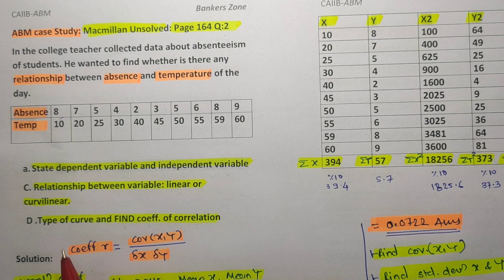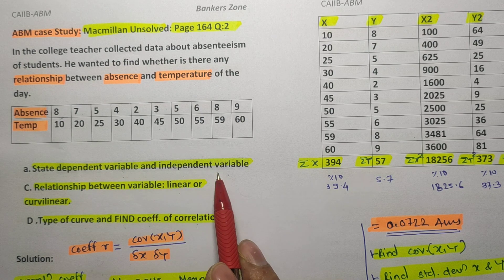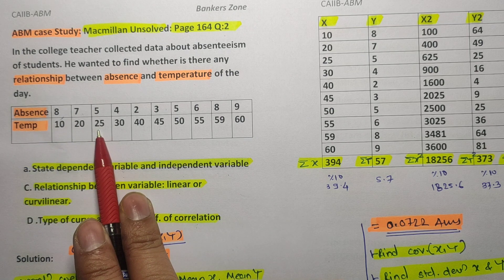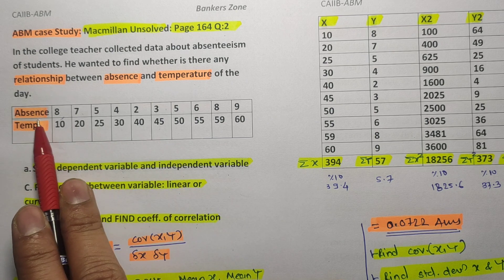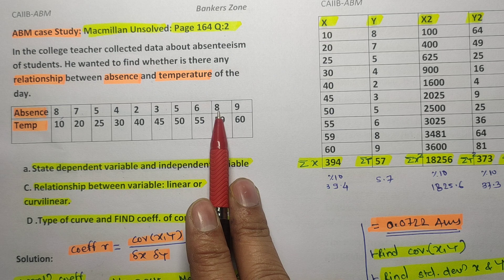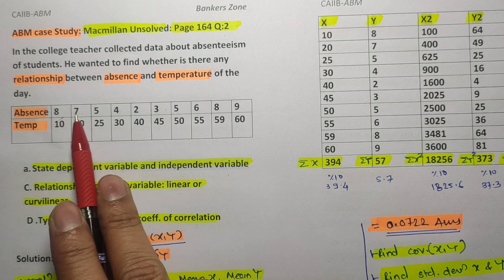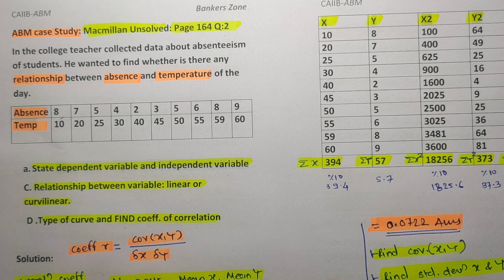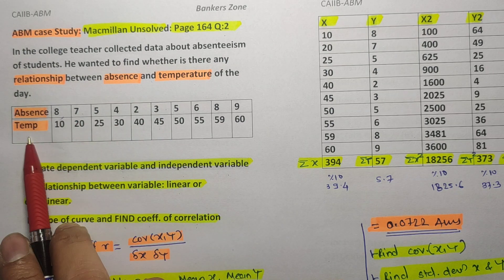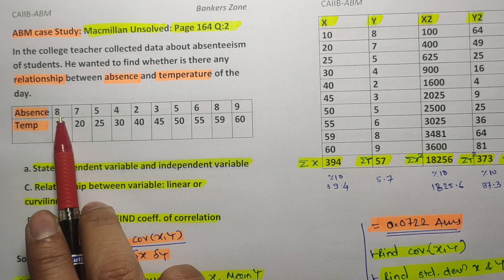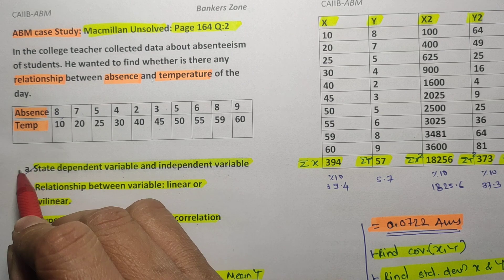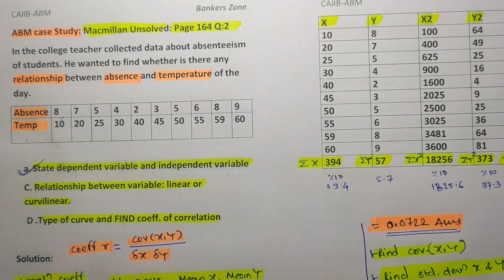Absenteeism of the students depends on the temperature of the day. If temperature increases, absenteeism may increase or decrease. Vice versa, we cannot say that if students are absent then temperature may change. So absenteeism is the dependent variable and temperature is the independent variable. That is why we assume temperature as X and absenteeism as Y.